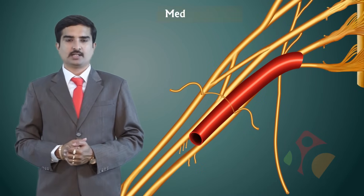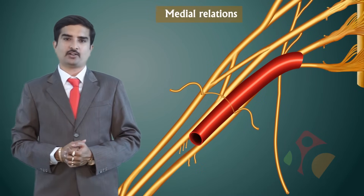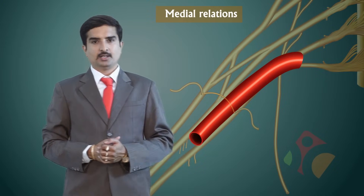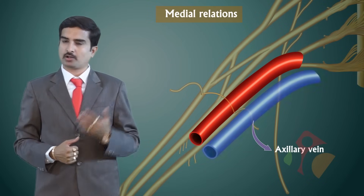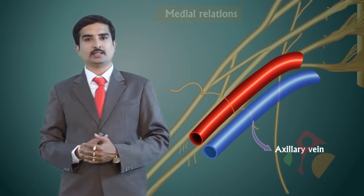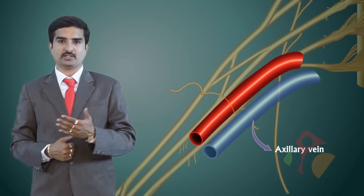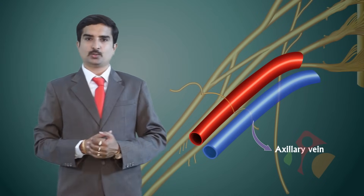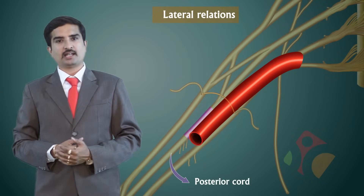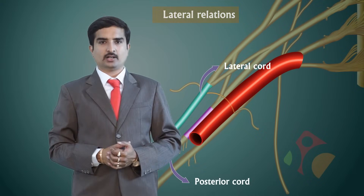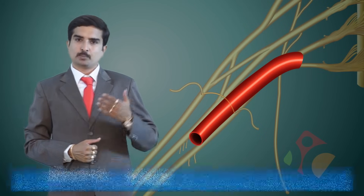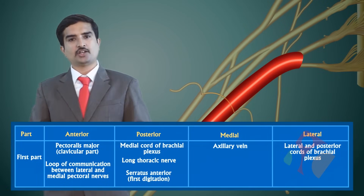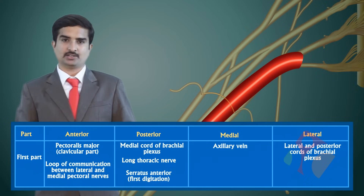The medial relation of the first part of the axillary artery is the axillary vein, as it is the medial relation throughout its entire course. Laterally, it is related to the posterior as well as the lateral cord of the brachial plexus. This completes the anterior, posterior, medial, and lateral relations of the first part of the axillary artery.